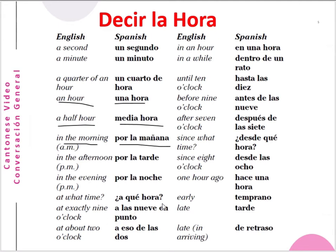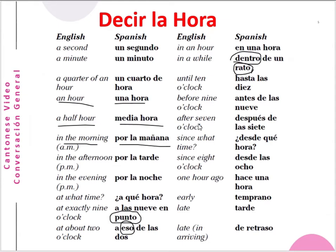At what time: ¿a qué hora? At exactly nine o'clock: a las nueve en punto — punto means exactly. At about two o'clock: a eso de las dos — eso means around or about. In an hour: en una hora. In a while: dentro de un rato — rato means a while. Until ten o'clock: hasta las diez. Before nine o'clock: antes de las nueve. After seven o'clock: después de las siete — después means after.